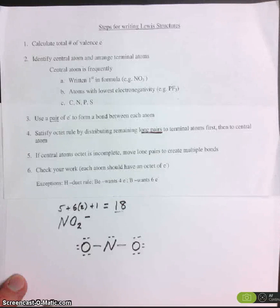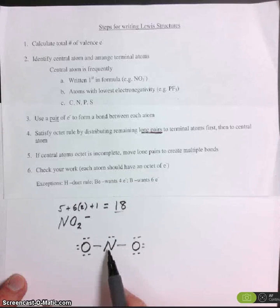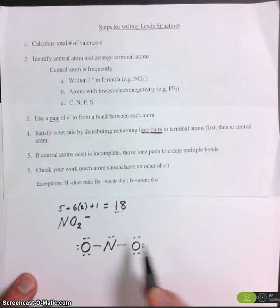Step number 5. If central atom's octet is incomplete, move a lone pair to create a multiple bond. Well, let's check. Nitrogen is surrounded by 2, 4, 6 electrons. It wants 8.